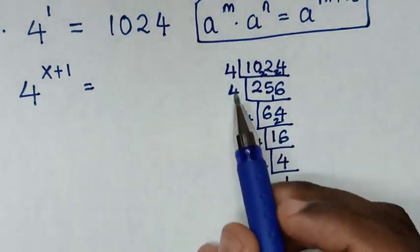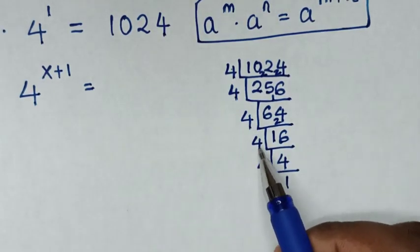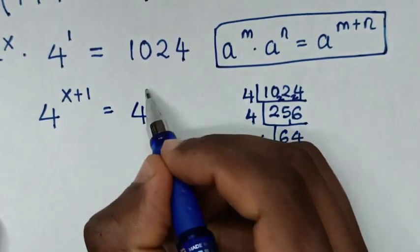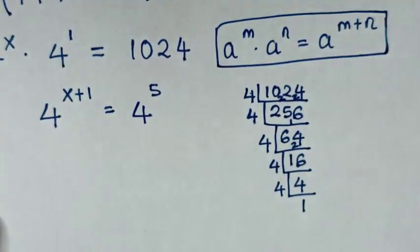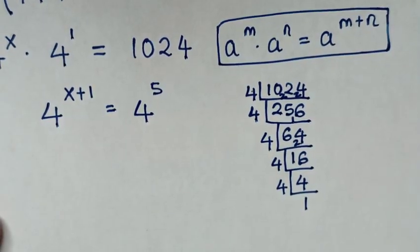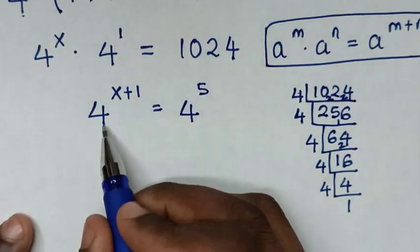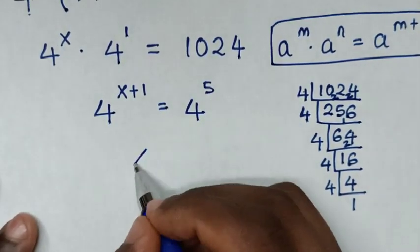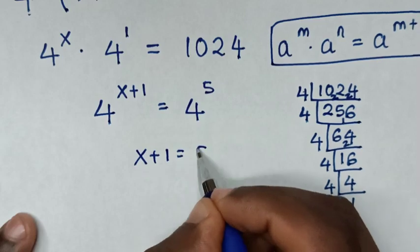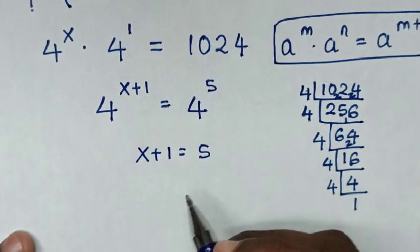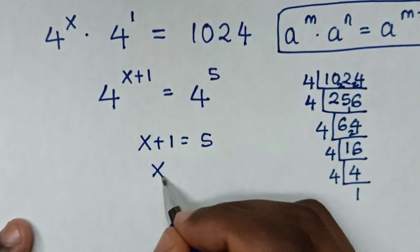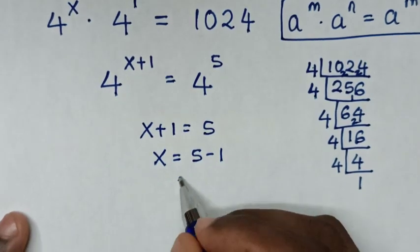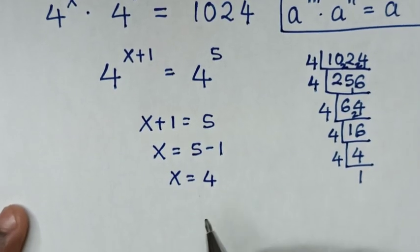Counting the divisions: 1, 2, 3, 4, 5. So 1024 equals 4 power of 5. Because we have the same base of 4, we compare the powers. So x plus 1 is equal to 5. We take 1 to the right side, so x is equal to 5 minus 1, which gives x is equal to 4.